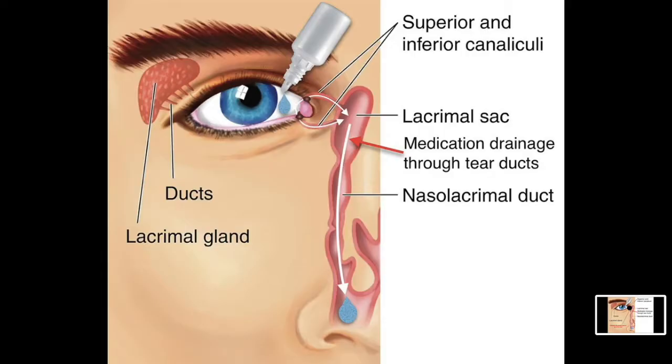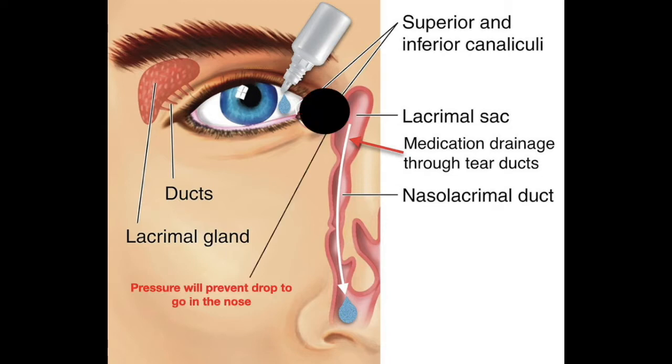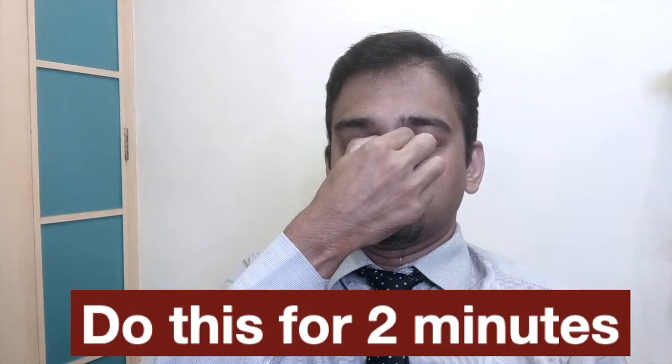Immediately on the application of the drop, keep your eyes closed for at least a couple of minutes and do what we call punctal occlusion, wherein you use your index finger and thumb to put pressure on the inner corner of the eyes just around the nose. This will ensure that the drop does not get into the nose, and there is no absorption in the body, thereby reducing chances of side effects.